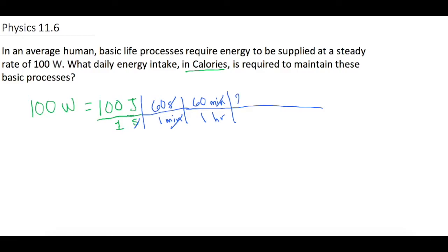And there are 24 hours in one day. Okay, so now if we go ahead and figure this out. We have 100 times 60 times 60 times 24. So we have 8,640,000 joules per day.